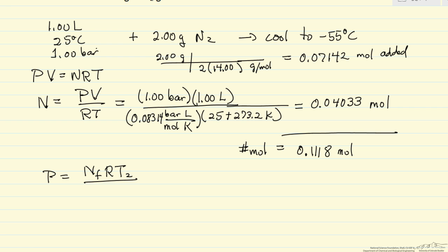A different temperature, the volume is the same. So number of moles we calculated after adding 2 grams times the temperature is now 273.2 minus 55 degrees C to put this in kelvin, and the volume hasn't changed, it's 1 liter.